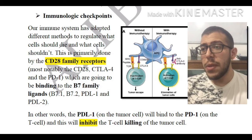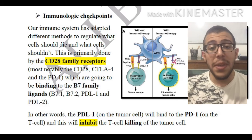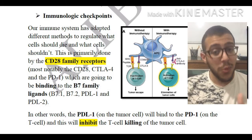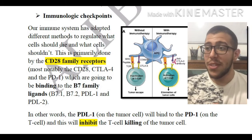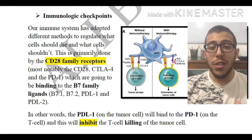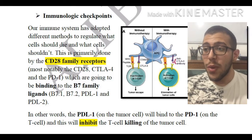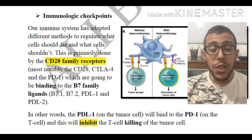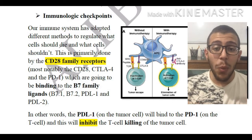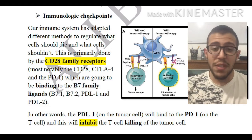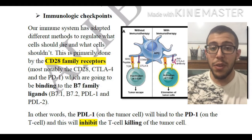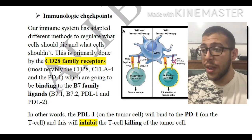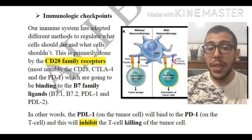These are going to be binding to the B7 family, which includes B7.1, B7.2, and PDL1 — which is the receptor for PD1 — and PDL2.